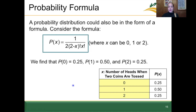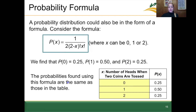When working with probability distributions, we can represent them as a table, a histogram, or using a formula. The probabilities found using the formula are the same ones in the table, which are also the same ones visible on the probability histogram.